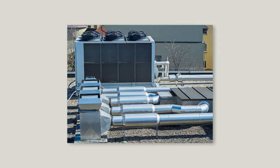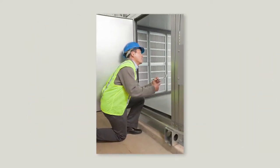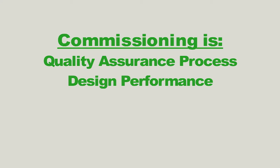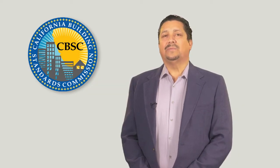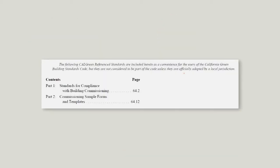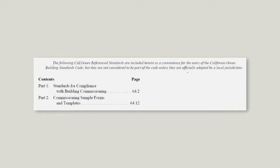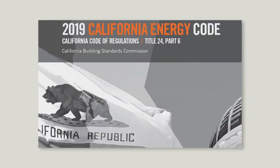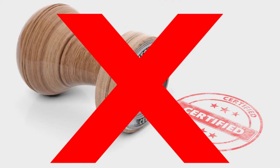Another important provision in Cal Green is building commissioning. Commissioning requirements apply to new non-residential buildings. Commissioning is a quality assurance process that ensures that buildings and components perform to their design capacity, including documentation for building owners and property managers. CBSC has developed reference standards printed in Cal Green; Chapter 8 includes sample forms and templates for commissioning. Note that commissioning is not the same as a certification that a building is green or sustainable, such as when a building owner seeks a rating from an outside organization that the building is zero net energy or a similar desired designation.